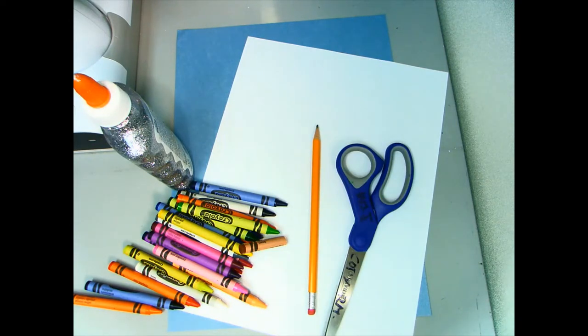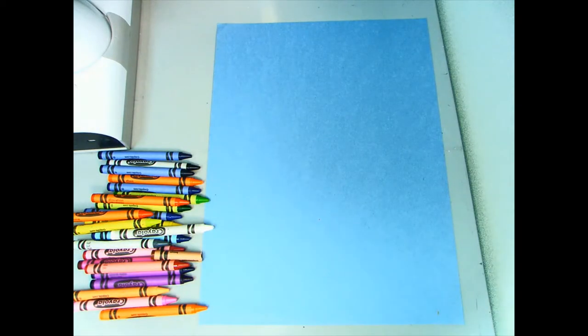Let's clear away our area and then we can get started. We're going to start with our mitten first. With your pencil, lightly draw the outline of a mitten with an arm coming out of it.